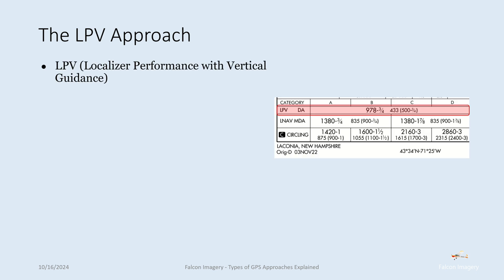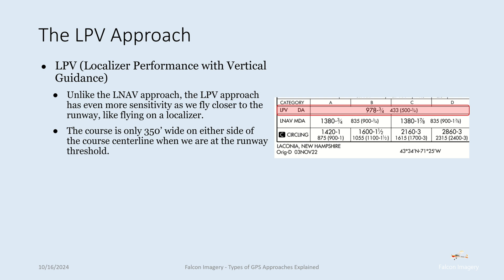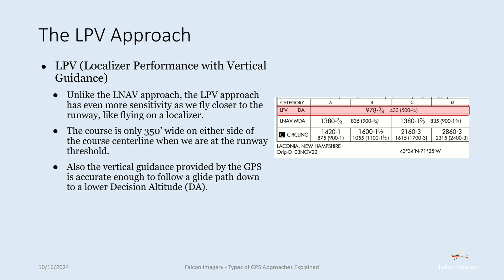Next, we have the LPV approach — localizer performance with vertical guidance. As you can see in the red box, the LPV has a decision altitude lower than the LNAV MDA. The LPV here is 978 feet versus the LNAV MDA of 1,380 feet, because we have vertical guidance with an LPV approach. It also has more sensitivity as we fly closer to the runway, like flying on a localizer — the course is only 350 feet wide on either side of the centerline at the runway threshold.